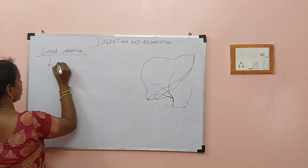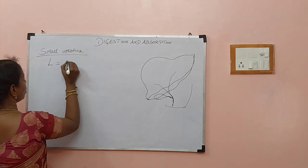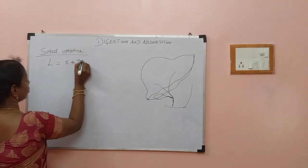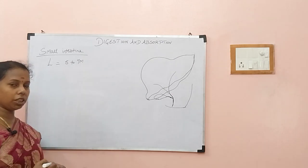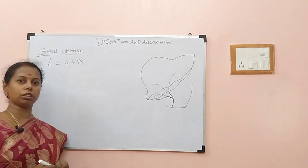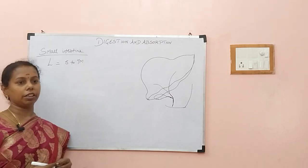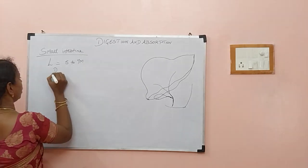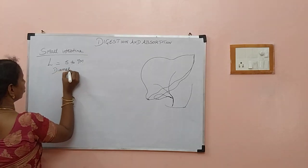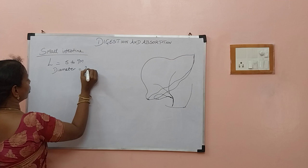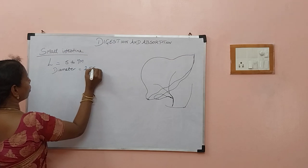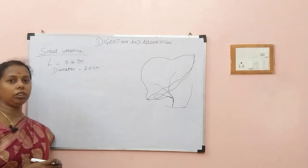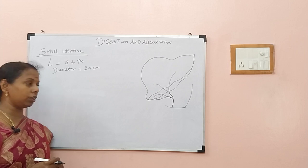The length of the small intestine is around 5 to 7 meters. The length is 7 meters — then why is it called the small intestine? Because the diameter is only 2.5 centimeters. So, because of the smaller diameter, it is called the small intestine.